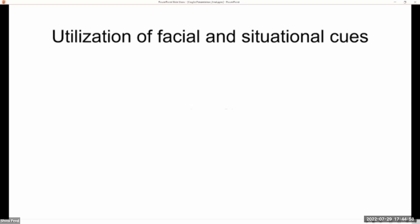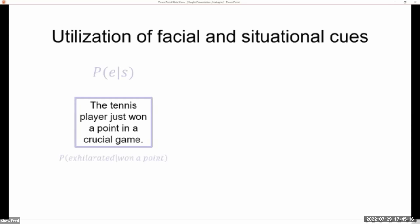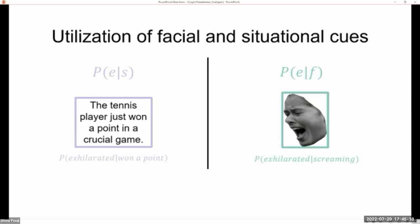Alternatively, we could also expect that observers infer emotions based on only one source of information, instead of integrating both of the cues. And we can test this by comparing the cue integration model to two simpler models that capture people's utilization of either just the situational information or the facial information alone.